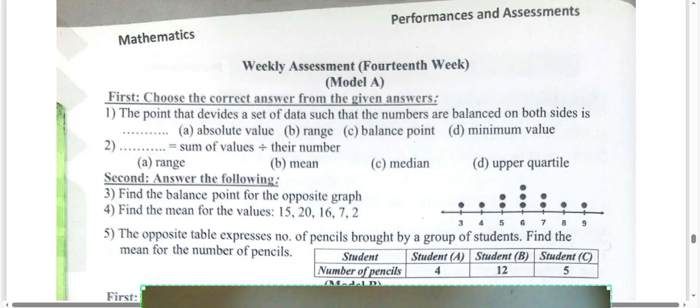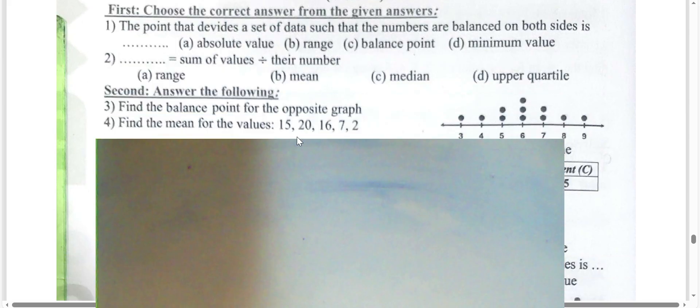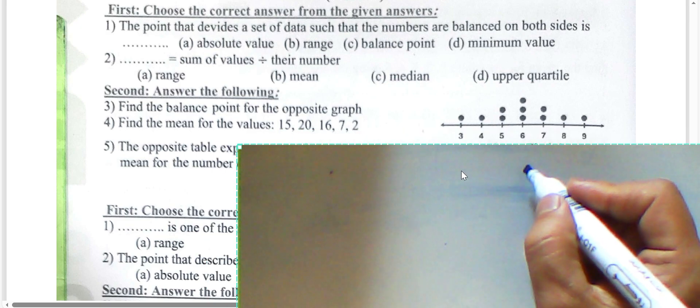Weekly assessment number 14, question one: the point that divides a set of data so that numbers are balanced on both sides is called the balance point — choose letter C. The mean equals the sum of values divided by the number of values. Looking at the graph, the balance point is six.